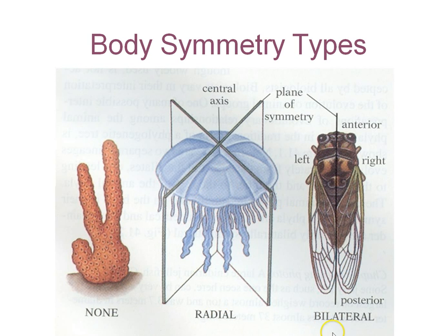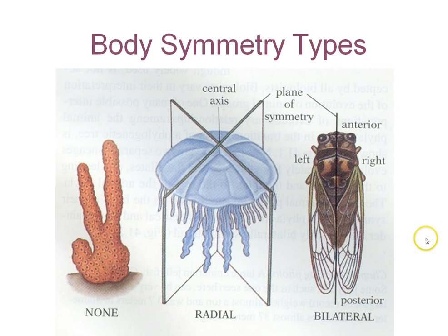Most animals have bilateral symmetry, where one side is a mirror image of the other side. For example, an insect — one side is a mirror image of the other. Turn to your partner and explain bilateral, radial, and no symmetry.